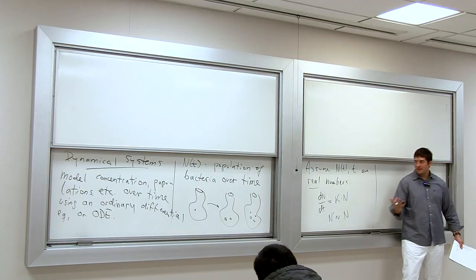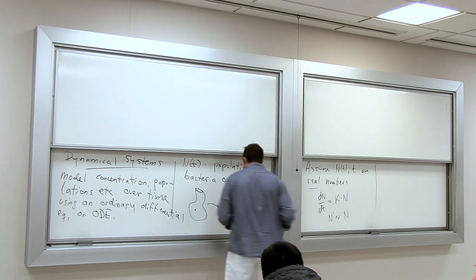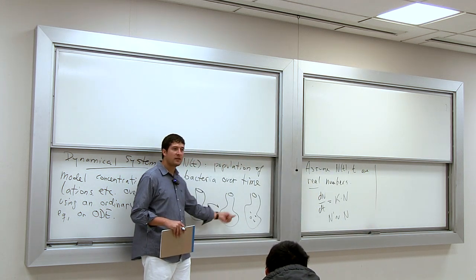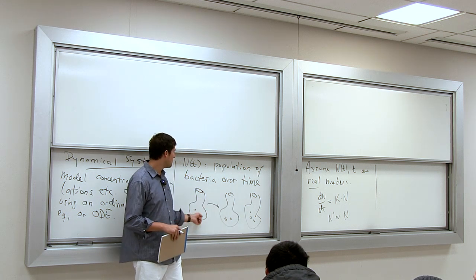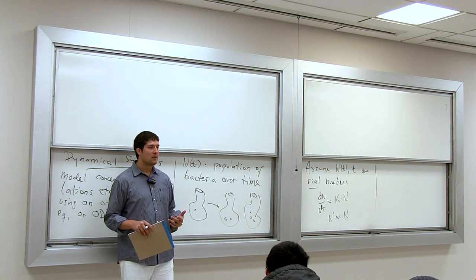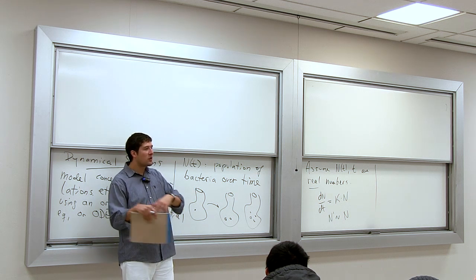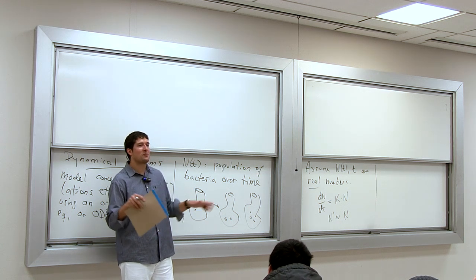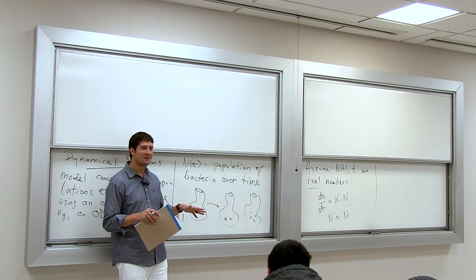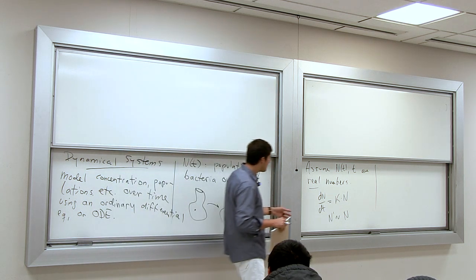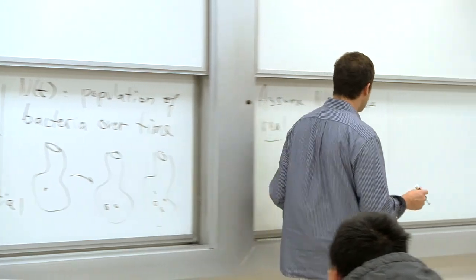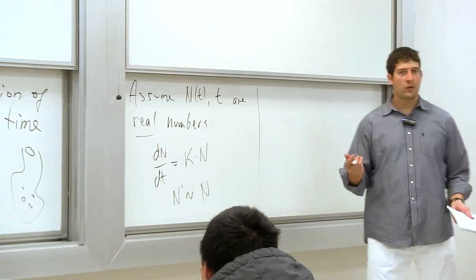This captures the idea that if you start with 2 bacteria you grow twice as fast as with 1. It encodes the idea that bacteria don't care how many other bacteria are around — as long as each has enough sugar, they grow at the same individual rate. That already is a big modeling assumption, and it's all encoded in this equation.